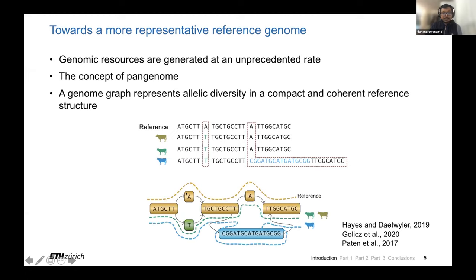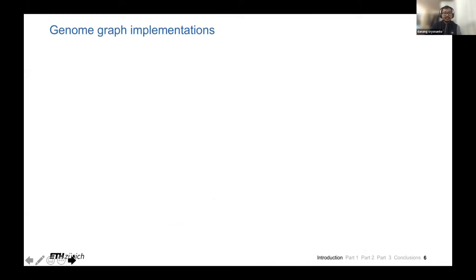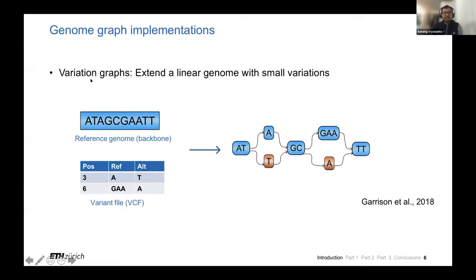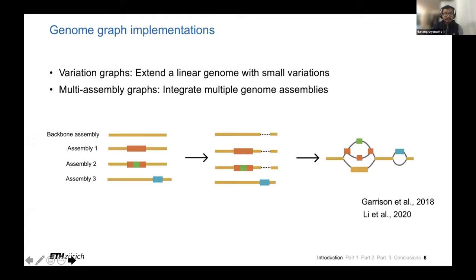We can retrieve the original input sequences by walking throughout the graphs. There are two main genome graph implementations. The first one is so-called variation graphs, which try to extend a linear genome with small variation initially found from linear genomes. We have a single-genome backbone and add variation as new nodes in the graphs. The second one is so-called multi-assembly graphs, which try to induce graph representation from alignment of multiple genome assemblies, so that this graph will theoretically contain all types of variations and not be limited by the ones initially found from linear genomes.